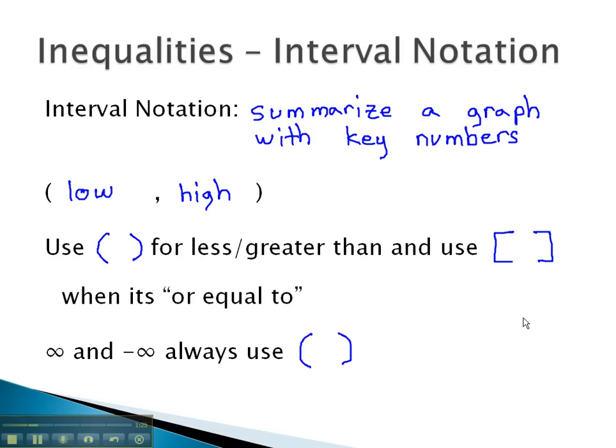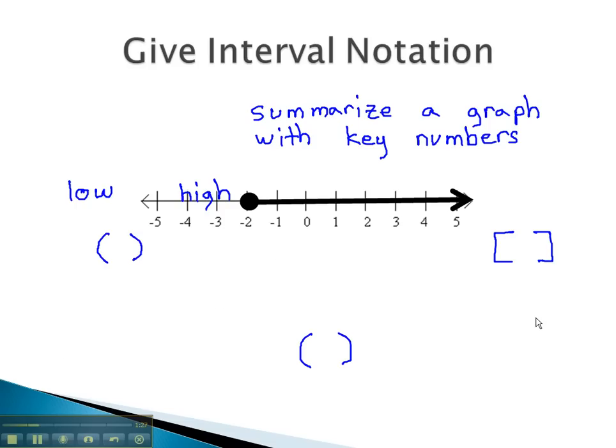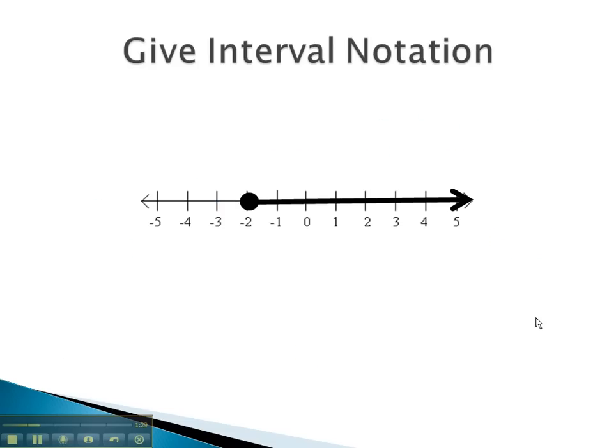Let's take a look at some examples where we find interval notation. In this example, we have a graph that starts at negative 2 and goes off forever on the end. Because it goes off forever on the end, we'll assume that goes up to infinity.